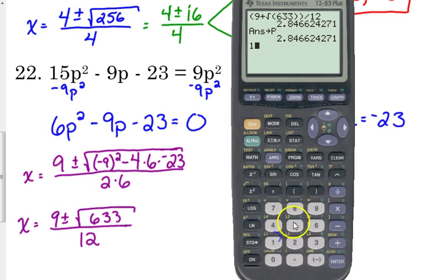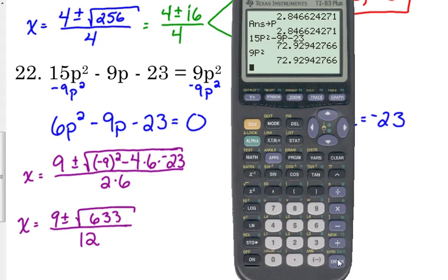So what you can do is you can go in and you can type in your equation exactly how it looks on your paper. So 15 P squared minus 9 P minus 23. Now we're not expecting 0 because it was equal to 9 P squared. So we also have to type in 9 P squared. And we're just trying to see, does the left side equal the right side? And it does.